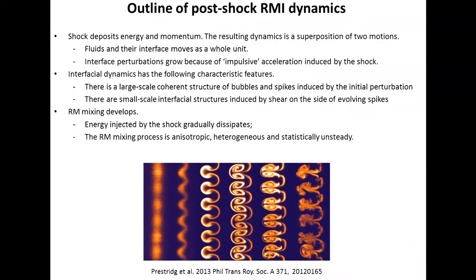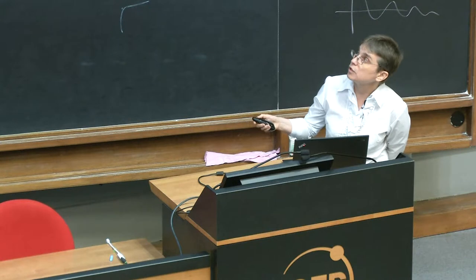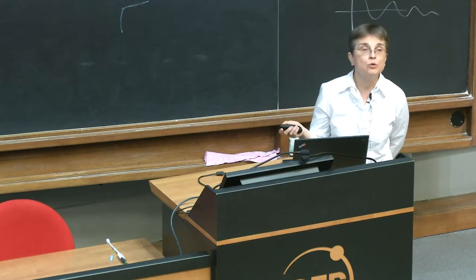The post-shock dynamics of Richtmeyer-Meshkov instability is a superposition of two motions. First, the fluids and the interface between them move as a whole unit. Second, interface perturbations start to grow due to impulsive acceleration induced by the shock. Looking at the interfacial dynamics — well illustrated by experiments — we see large-scale coherent structures induced by initial perturbations, and small-scale irregular structures, even though it is hard to tell how turbulent those structures are.